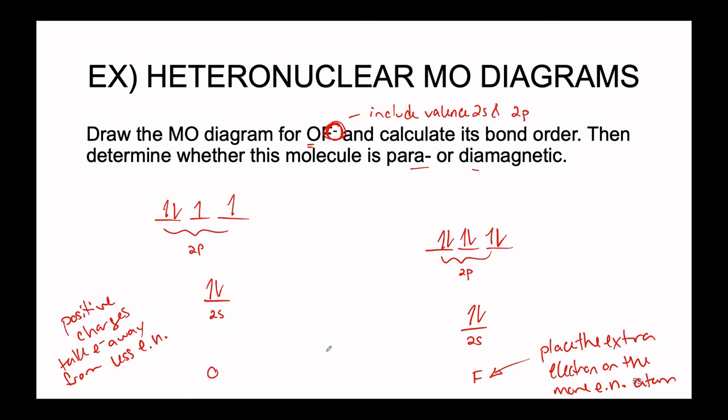The two S's will give us a sigma as well as a sigma star. We'll connect the dots here. We're going to place all 1, 2, 3, 4 electrons into the sigma and sigma star.